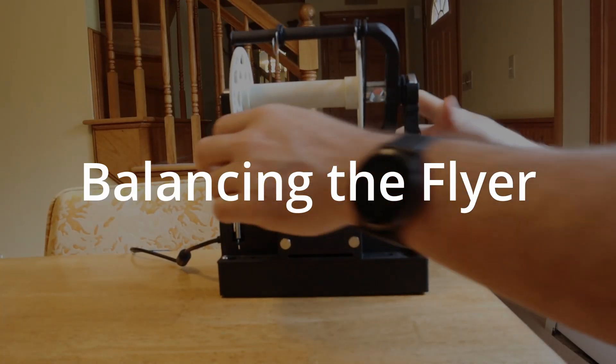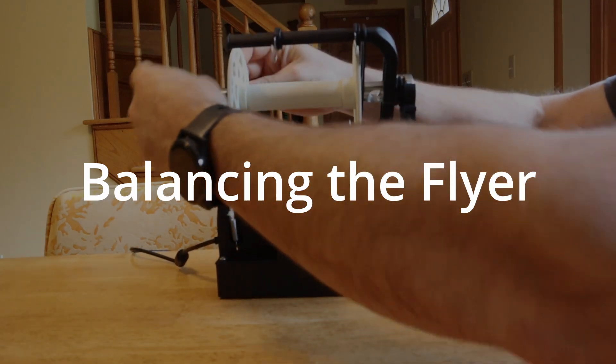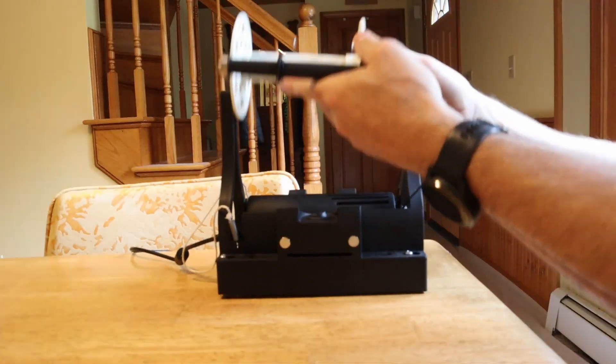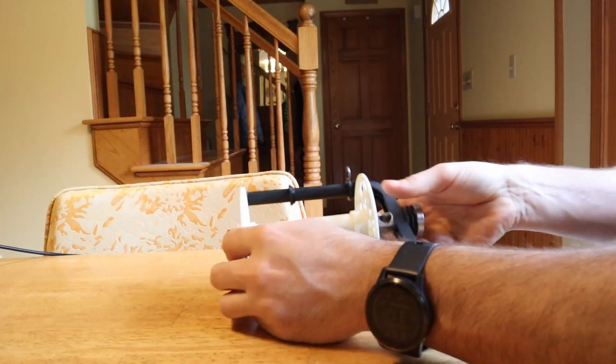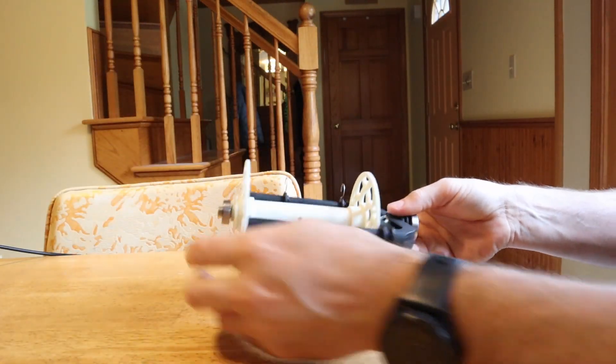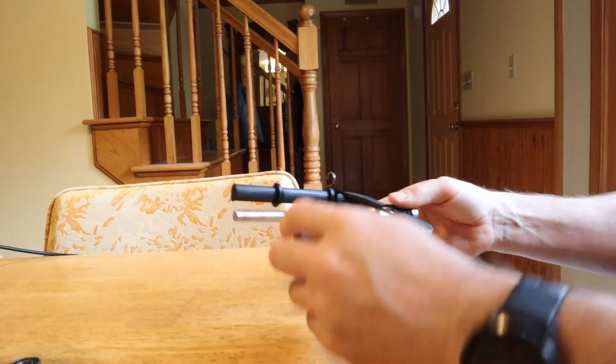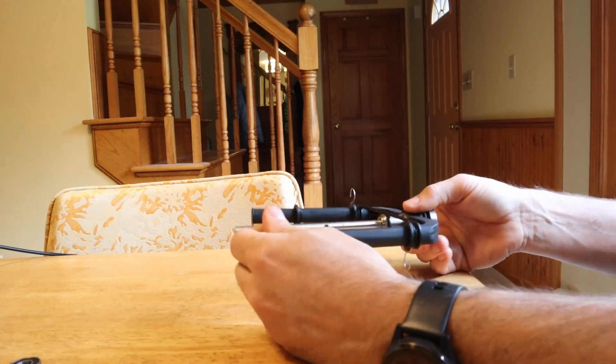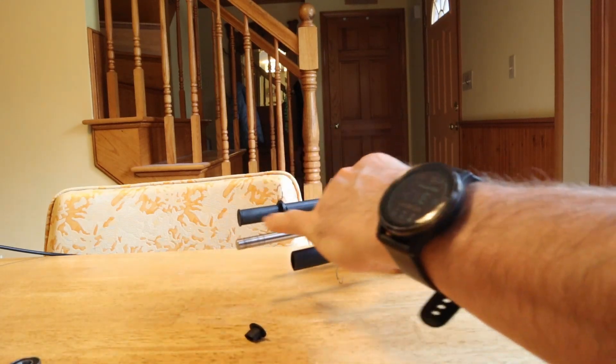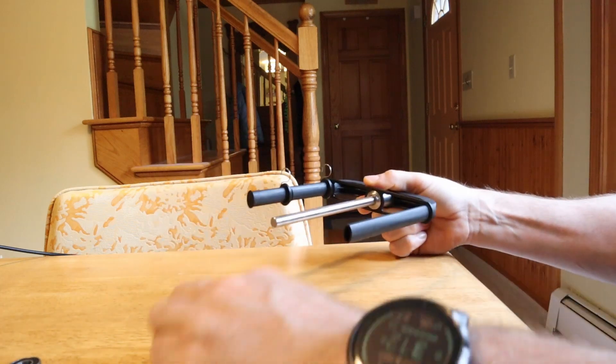Now I want to talk about the next step you can go if you want to really work on reducing the vibrations. So with the flyer here I would take off the bobbin and you can do it with or without the hooks. I'm actually going to show you without the hooks attached right now because I think that's a better way to get started with this process.